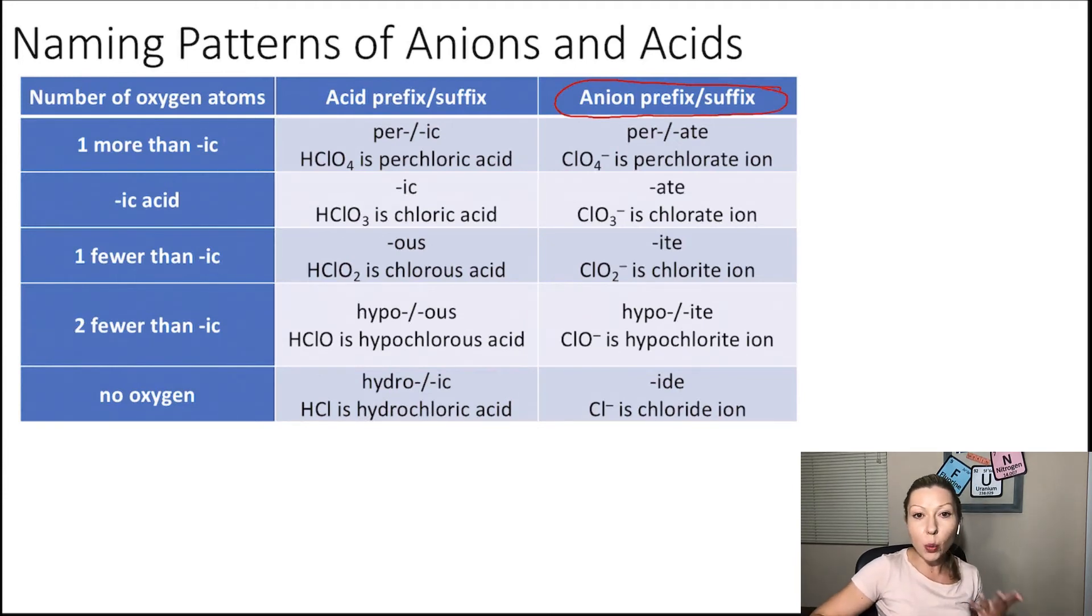Remember, we started with the perchlorate ion, where we have a prefix, which is per-, and -ate is the suffix. Now, if I have one less oxygen atom, so ClO3 minus, I have an -ate ion. So this is chlorate. If I take away another oxygen atom, so ClO2 one minus is going to be the chlorite ion.